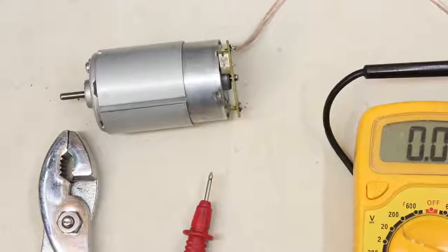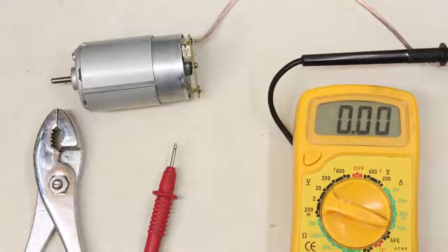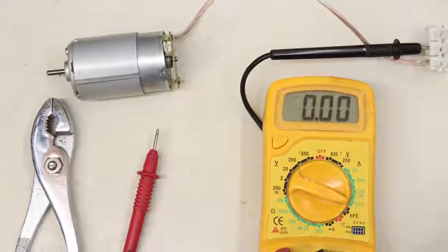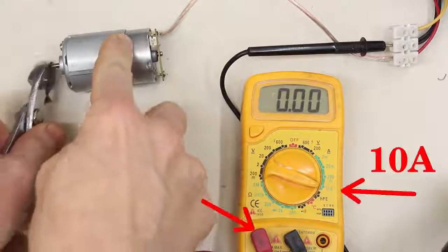Have a look on my project page to get more details. Switch your multimeter to the highest current range that is 10A at this device and plug the red cable into the high amp connector if needed.